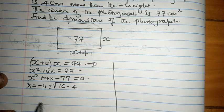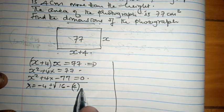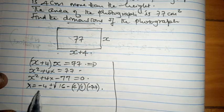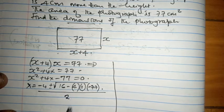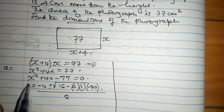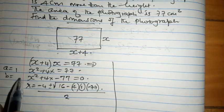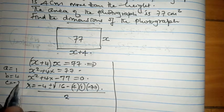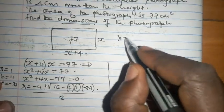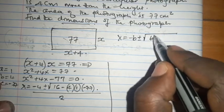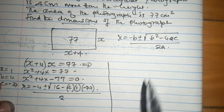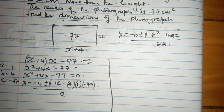I would have highlighted that our a here is 1, our b equals 4, and our c equals minus 77. And we all remember that x equals minus b plus minus square root of b squared minus 4ac, everything over 2a. That is how we use the quadratic formula.